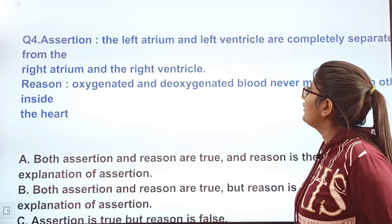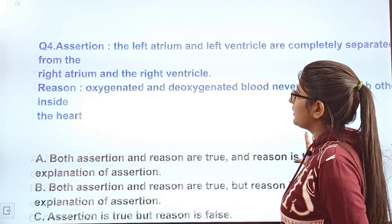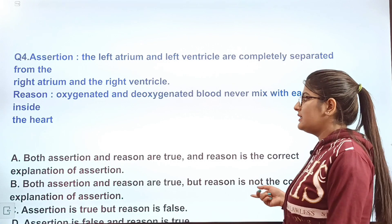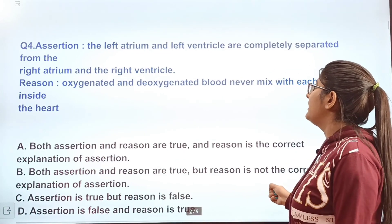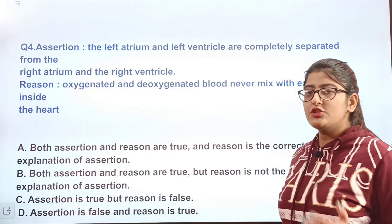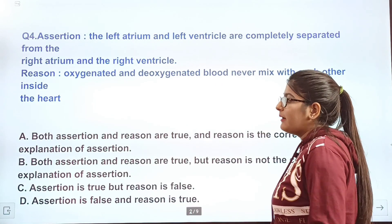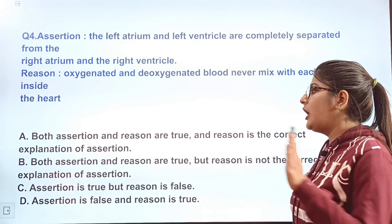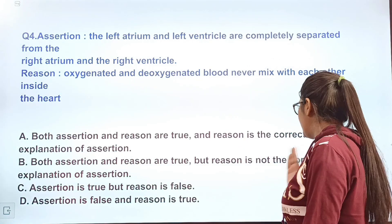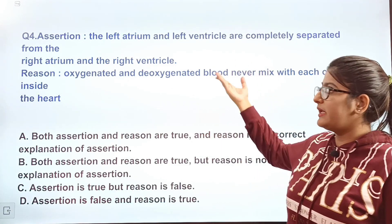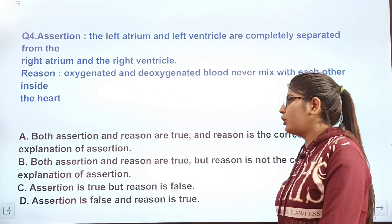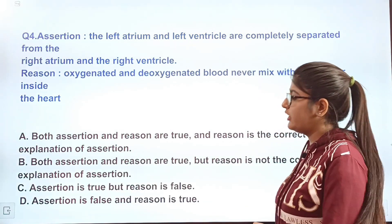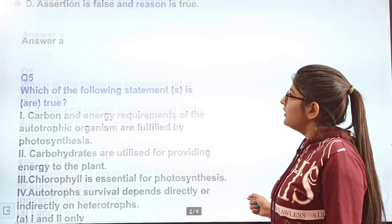Question 4 is an assertion-reason question. Assertion: The left atrium and left ventricle are completely separated from the right atrium and right ventricle. Reason: Oxygenated and deoxygenated blood never mix with each other inside the heart. Options: A — both assertion and reason are true and reason is the correct explanation; B — both true but reason is not the correct explanation; C — assertion is true but reason is false; D — assertion is false and reason is true.